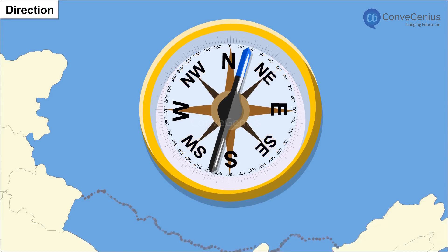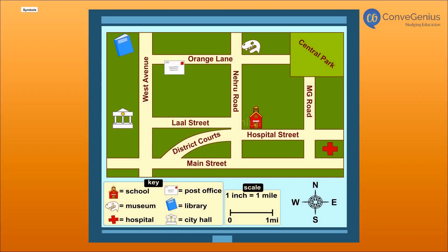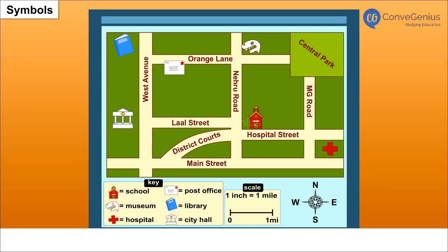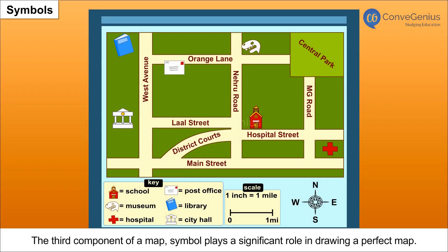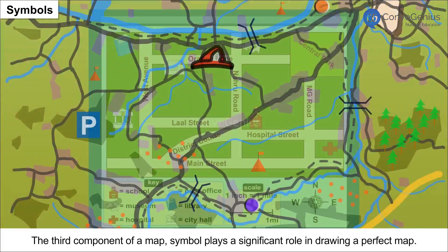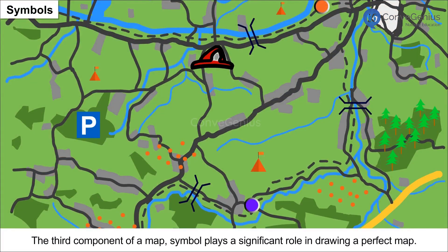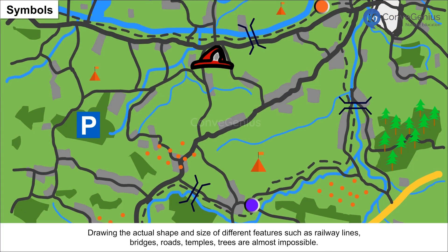We can use a compass to find out the direction of a specific place. Its magnetic needle always points towards the north-south direction. Symbols: The third component of a map, symbol, plays a significant role in drawing a perfect map.